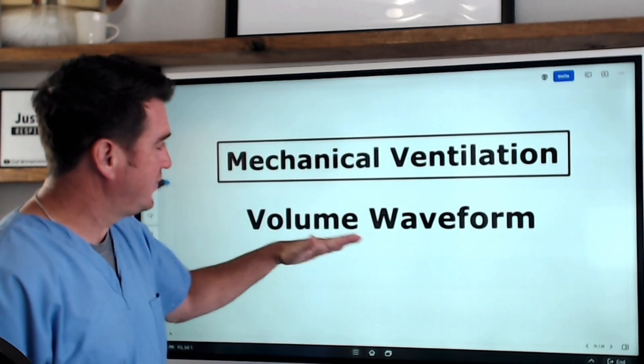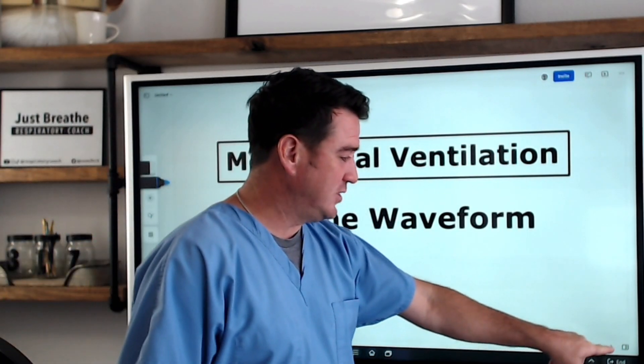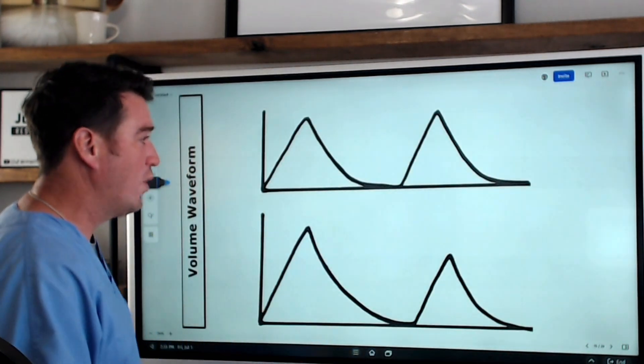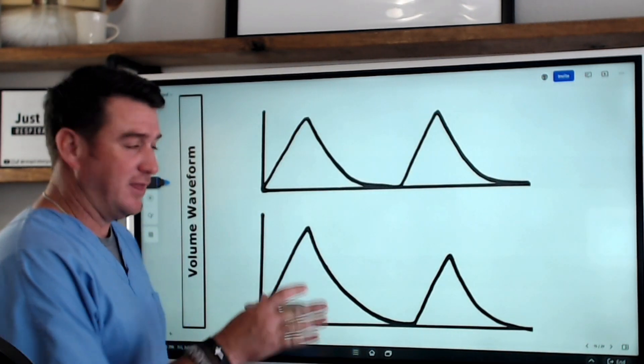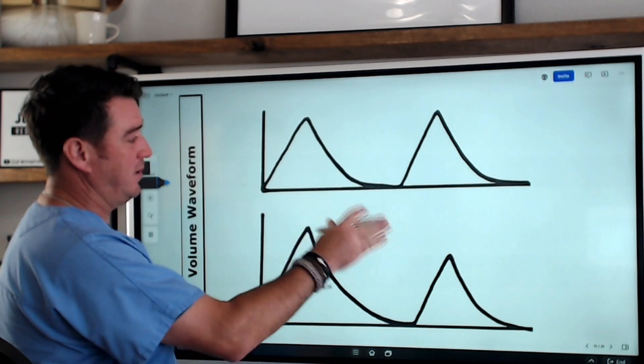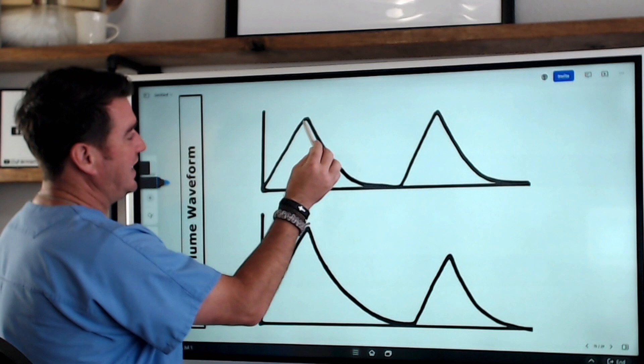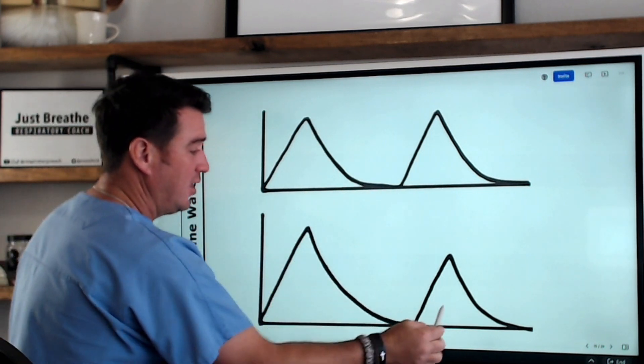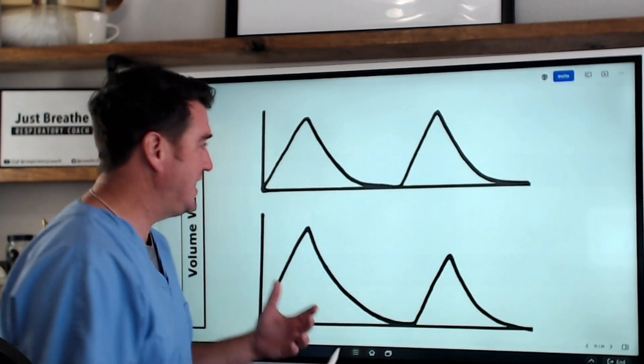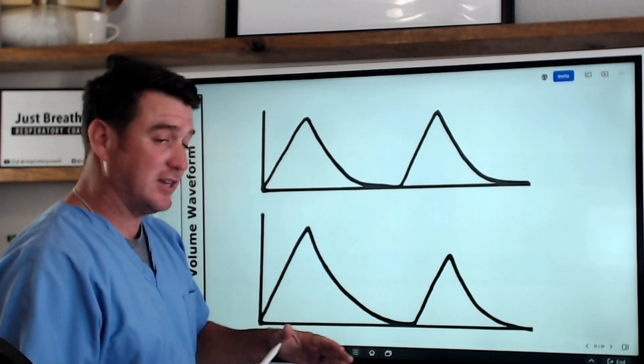As I stated today we're talking about the volume waveform. Let's go ahead and jump into it and show you what the volume waveform looks like. This is an example of the volume waveform. Now what you need to understand first of all is that each of these are a breath. So we're seeing four different breaths on this screen.